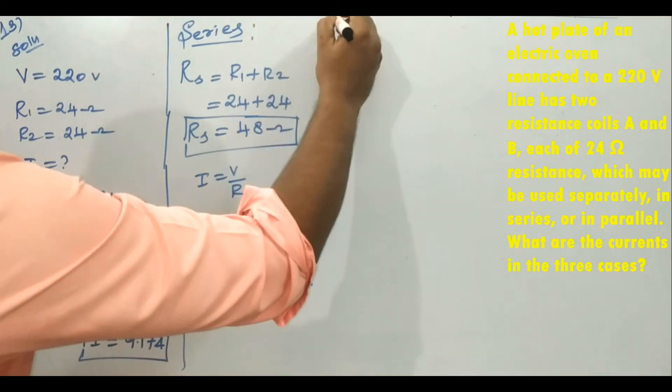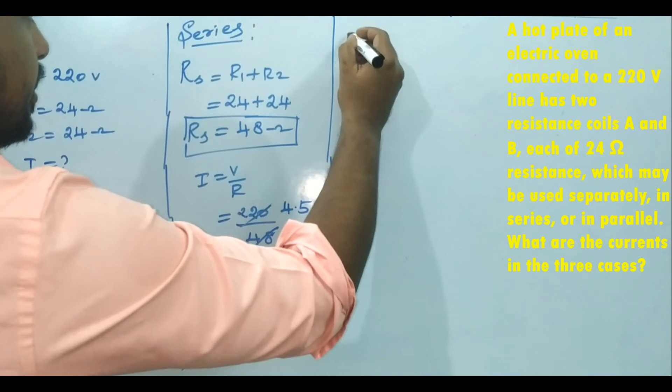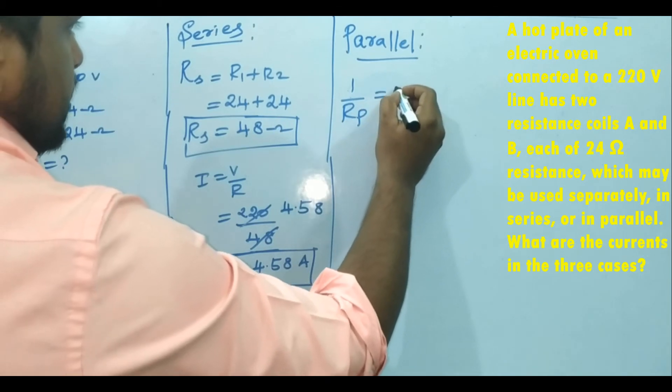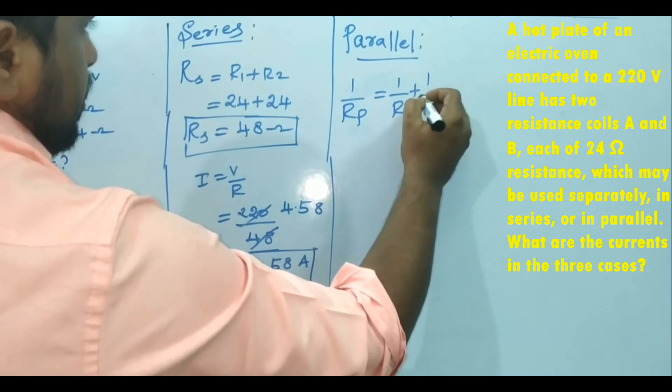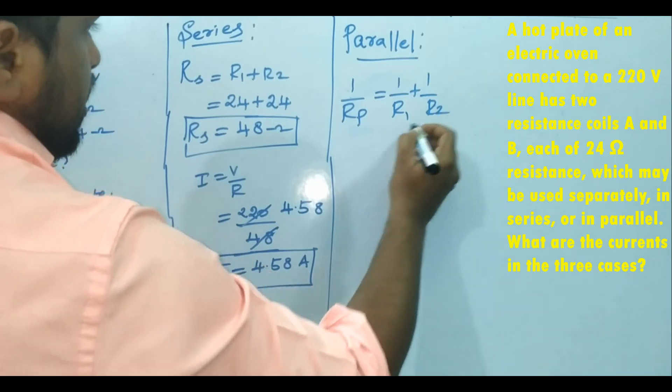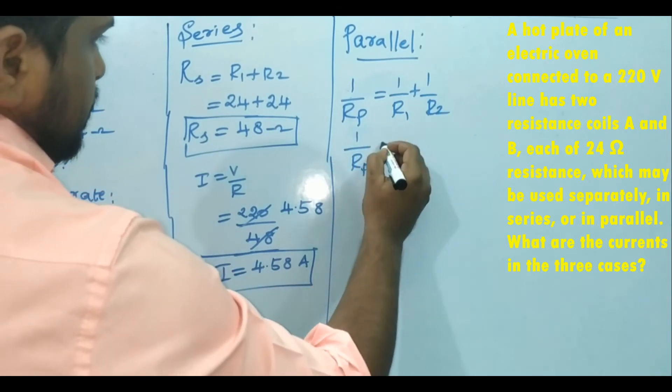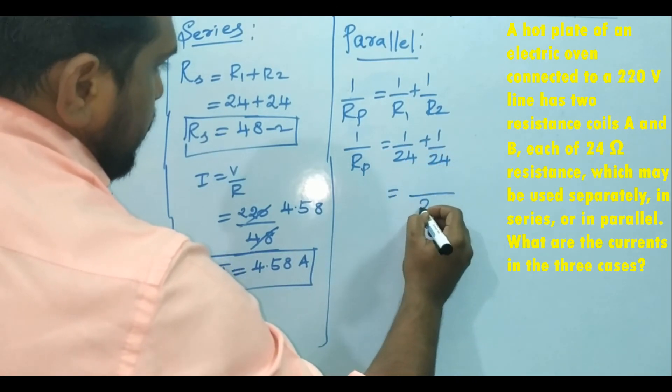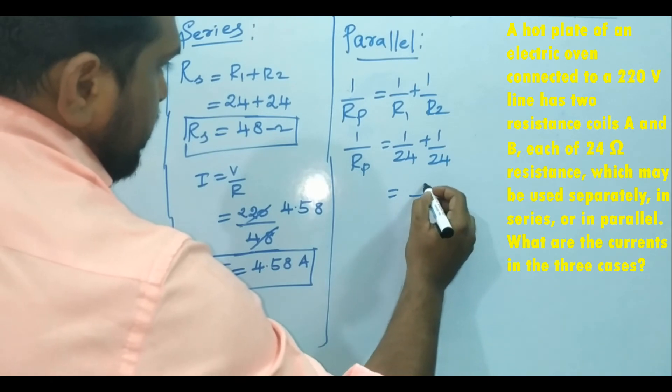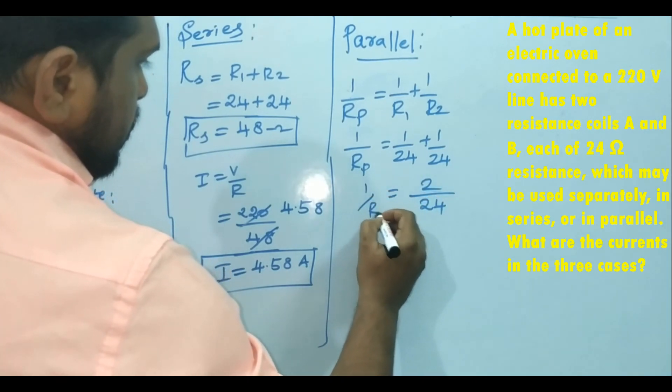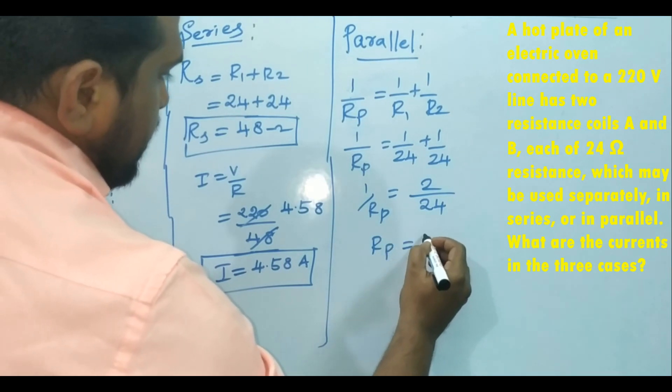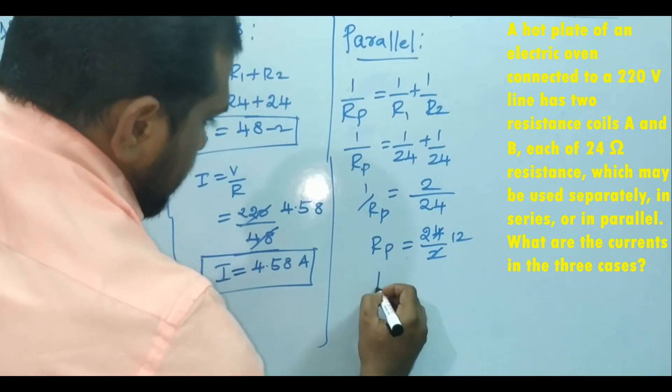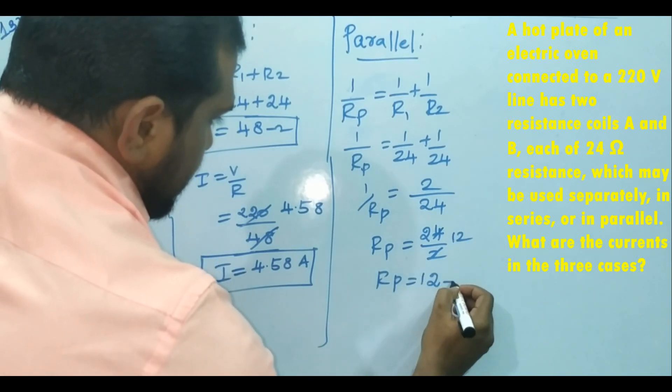Next, if we connect these resistances in parallel, then the equivalent resistance formula: 1 by R parallel is 1 by R1 plus 1 by R2. We will take 24 as LCM, then it becomes 2. Then resistance in parallel equals 24 by 2, which becomes 12. So the resistance in parallel is 12 ohm.